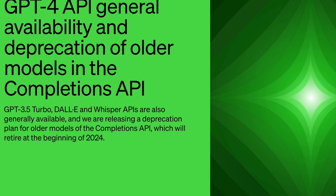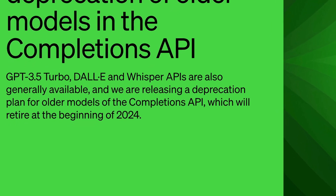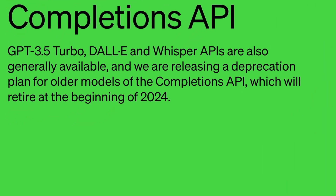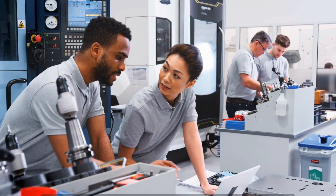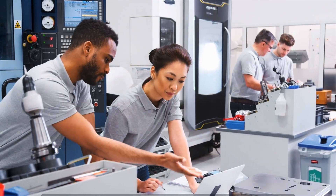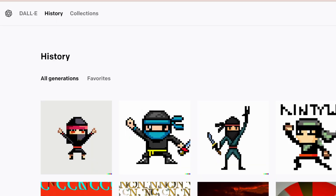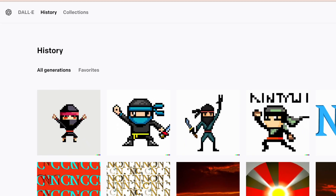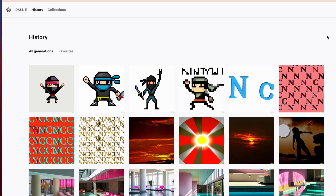OpenAI has also made an announcement regarding the availability of APIs for Whisper, DALL-E, and GPT-3.5 Turbo. The company plans to continue refining and improving these models throughout the year. I for one look forward to adding image generation to my app.